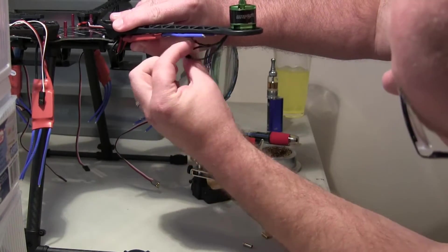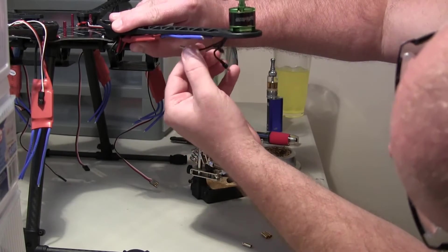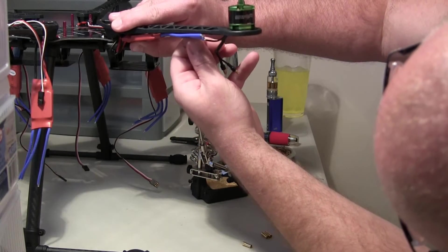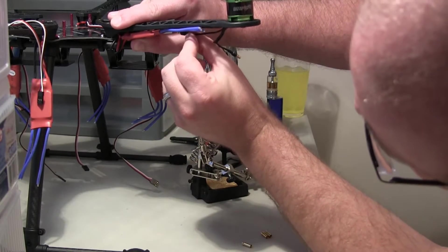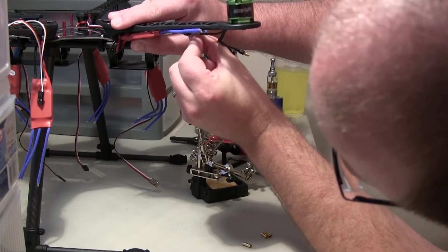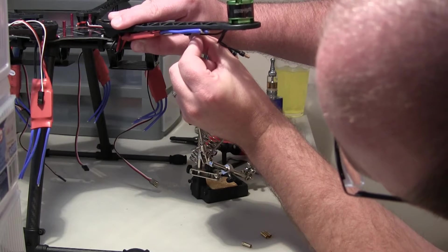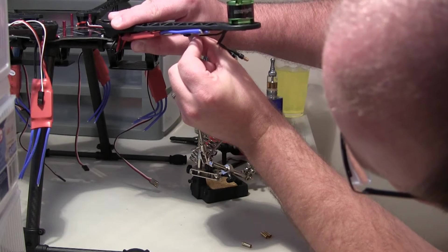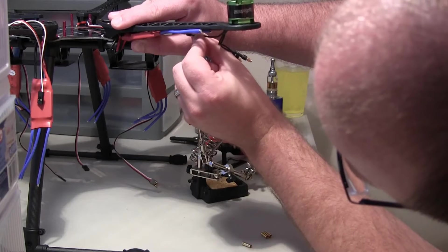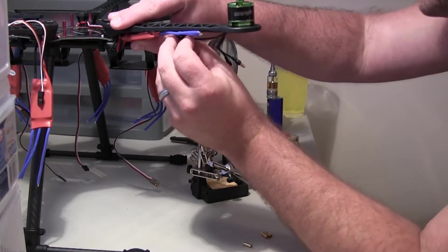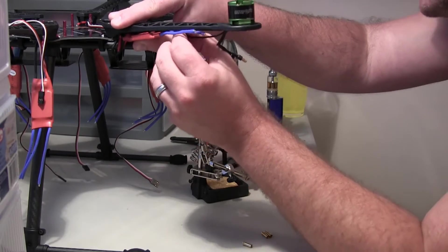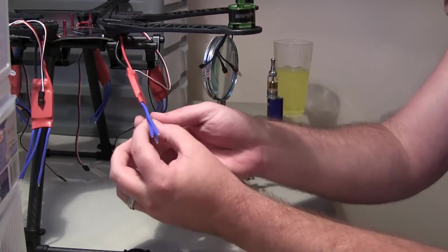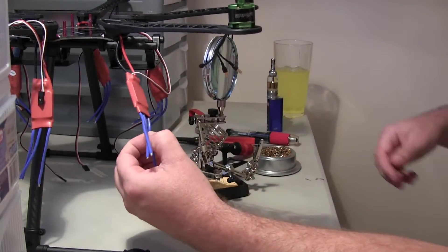And the motor wires go out about... It's going to be close. There's still going to be a little slack too. So they're going to be really close to the ESC. But that's okay. I'd rather have that than a whole bunch of slack.